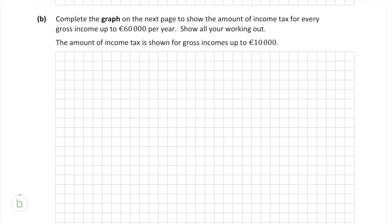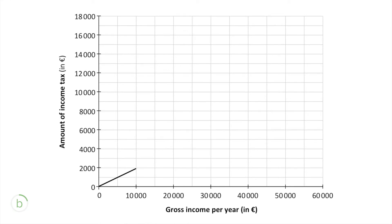In part B, we have to complete a graph showing the amount of income tax for every gross income up to €60,000 per year. The income tax up to €10,000 is already filled in, and since it's a linear function up to €35,000, we can just continue this line. Since a new band of income tax begins at €35,000, the slope of our graph is going to change from this point on.